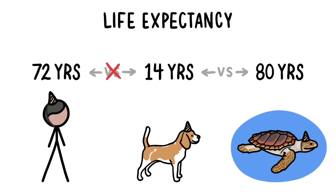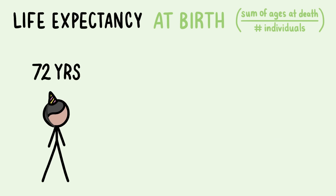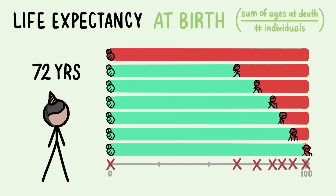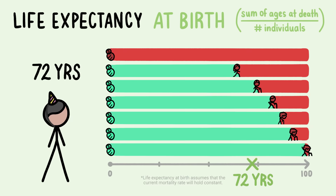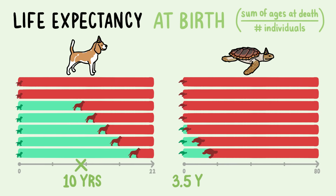But these numbers can't actually be compared because they were calculated using three different definitions of the term life expectancy. The one we use for humans is life expectancy at birth. Basically we say, if a group of individuals are all born in the same year and die whenever they die, what would their average age of death be? But if we use that formula for dogs and loggerheads, we'd get 10 and 3.5.